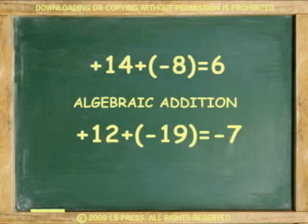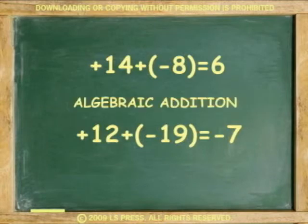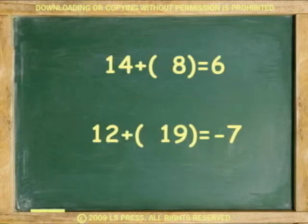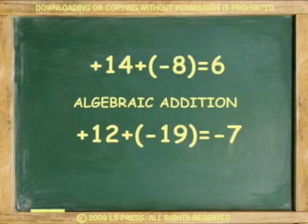What we just did is called algebraic addition. Notice that we are always adding, except that when you add a positive and a negative number, you are actually subtracting. Nevertheless, it is called algebraic addition.